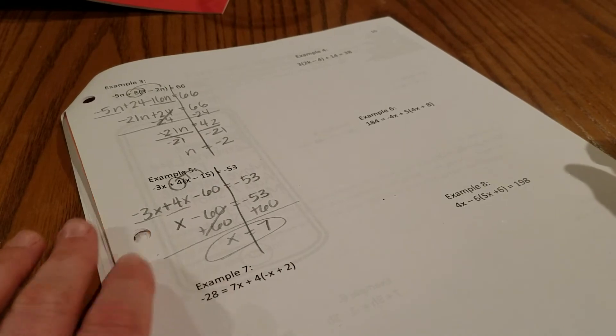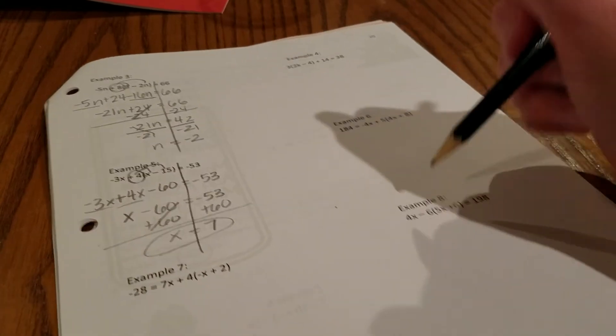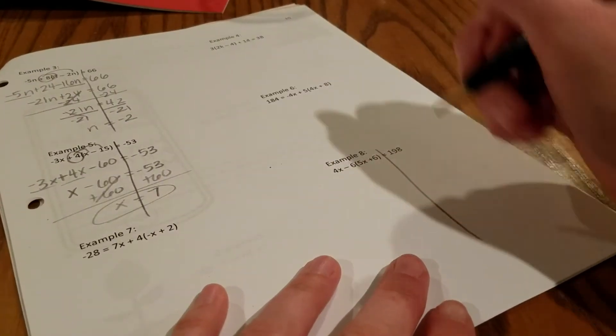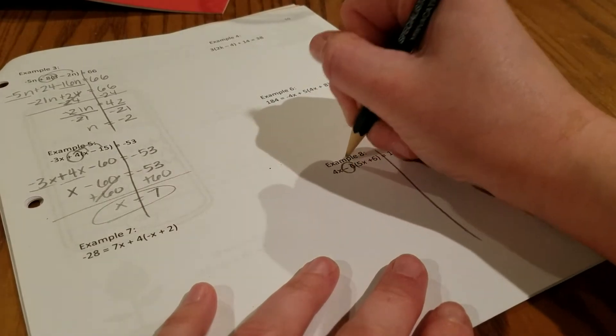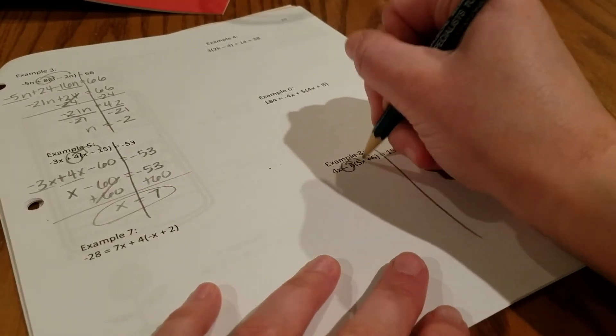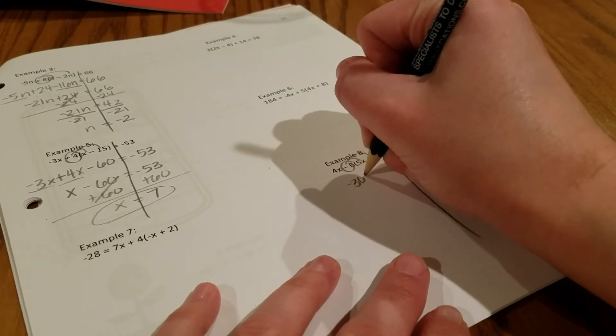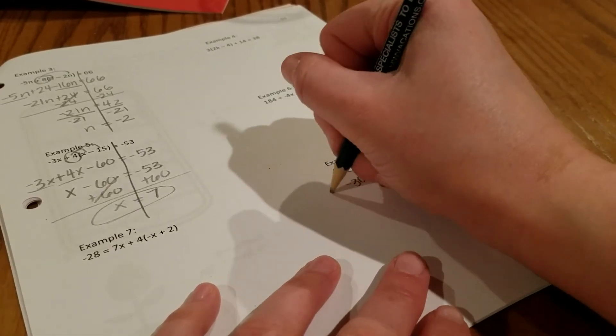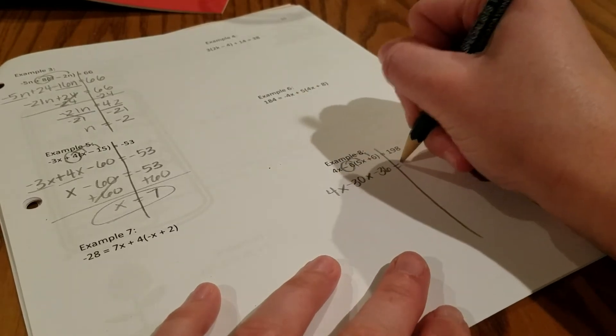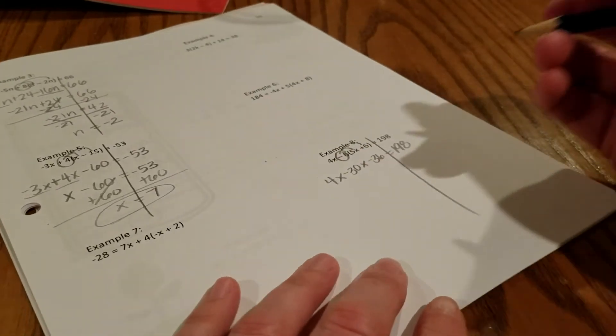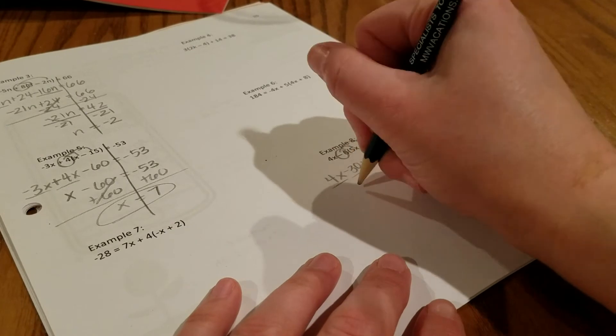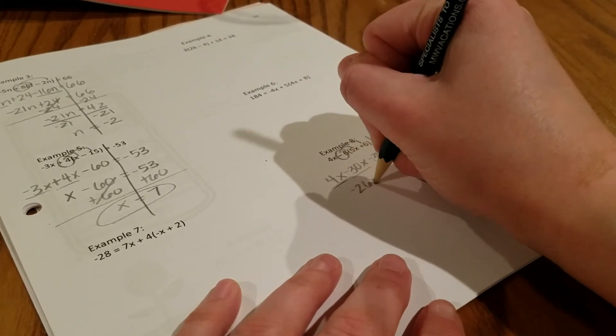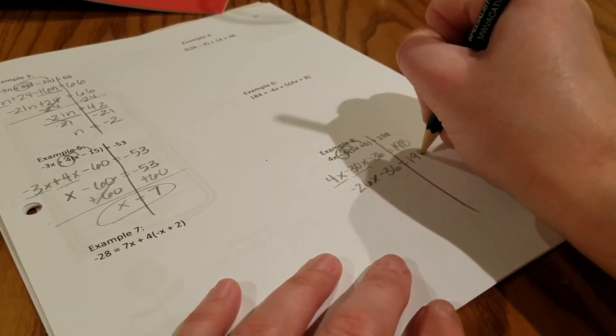I'm actually going to break what I said I was going to do. Let's jump over to example number 8. The reason I want to do this one is the 6 gets distributed, but look, it's a negative 6. So negative 6 times 5x is negative 30x. Negative 6 times 6 is negative 36. Don't forget the 4x out front. 4x minus 30x is negative 26x minus 36 equals 198.